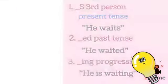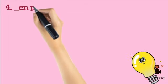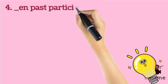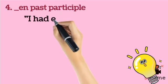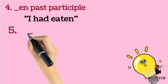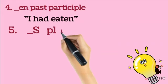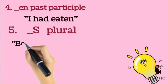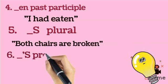The fourth inflectional morpheme is -EN, used as a past participle. For example: I had eaten. The fifth inflectional morpheme is -S, used as a plural. For example: both chairs are broken.